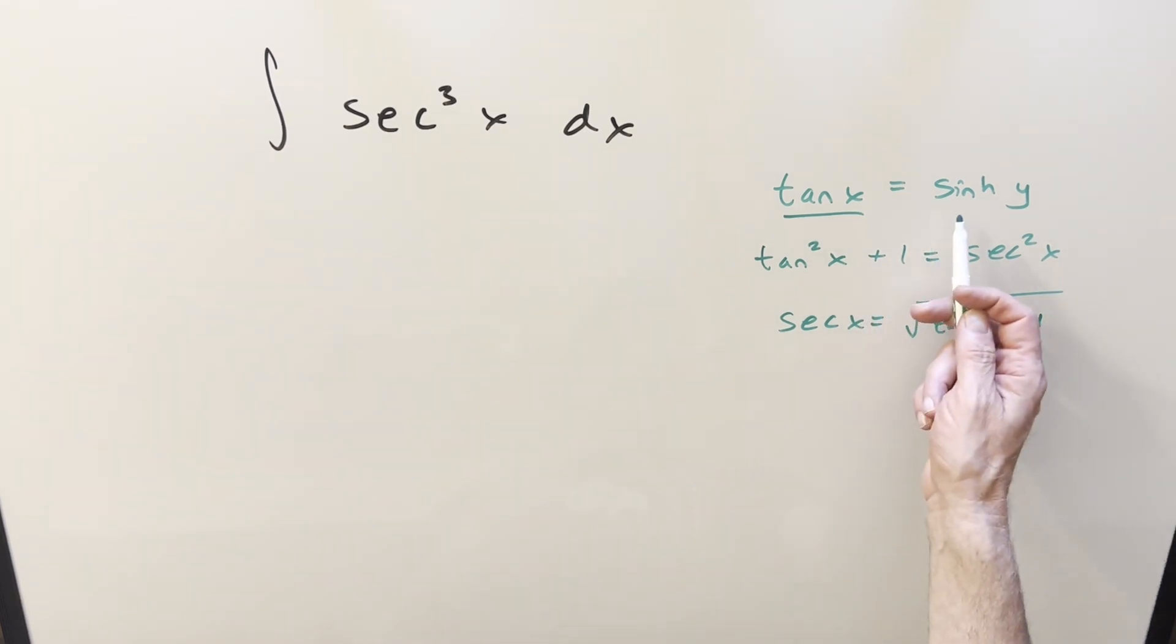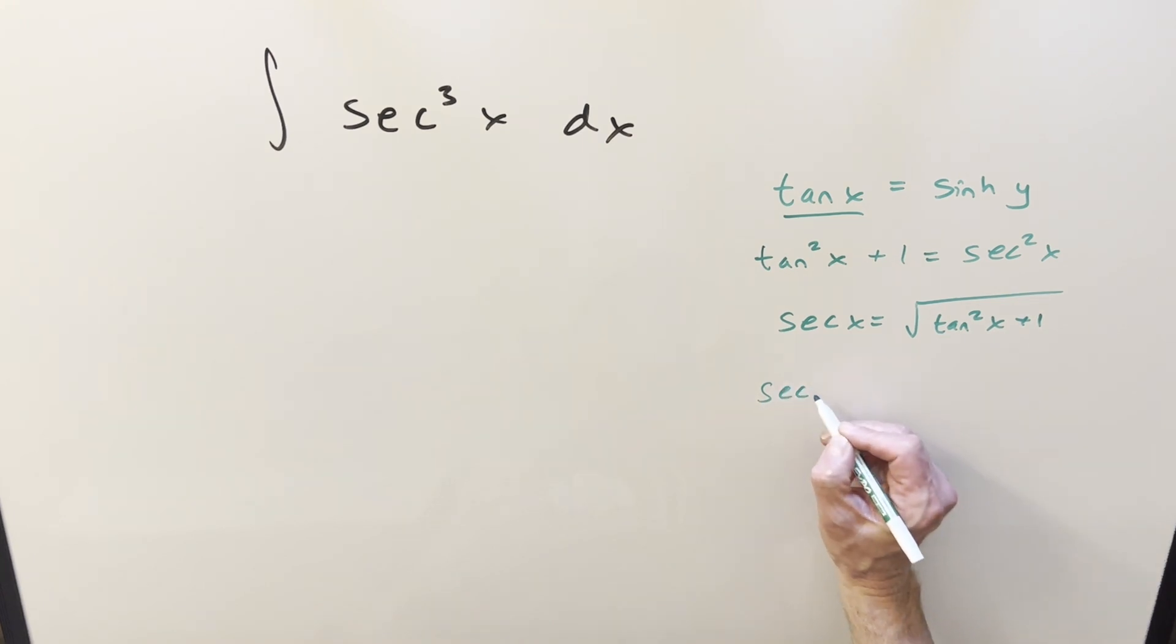And then using sinh of y for tan x, we can plug that in and we can write secant x as square root of sinh squared y plus one. But sinh squared y plus one, we've got an identity for that, that's cosh squared of y.